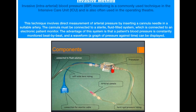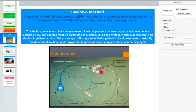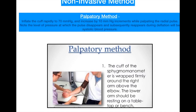The components are: a cable which is connected to the monitor where blood pressure is displayed, and the arterial cannula which is inserted into the artery to take the blood pressure reading. These two are the main components of the invasive method.